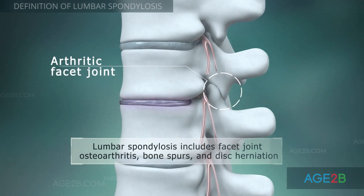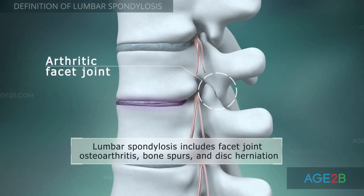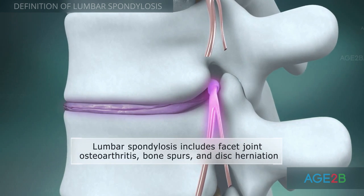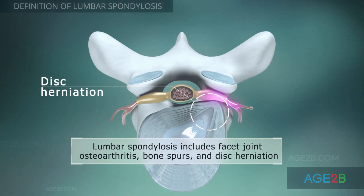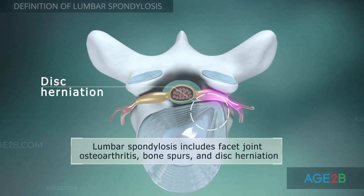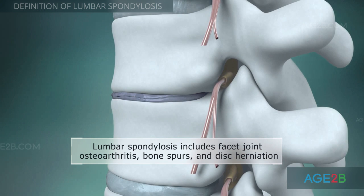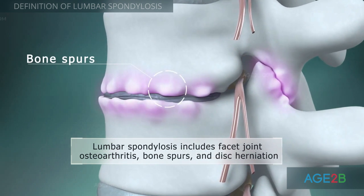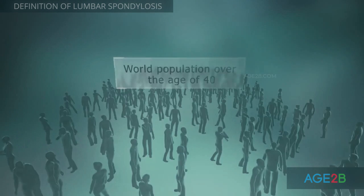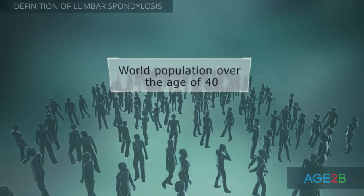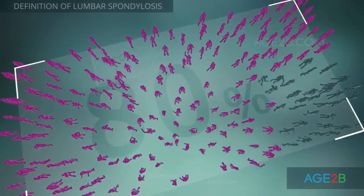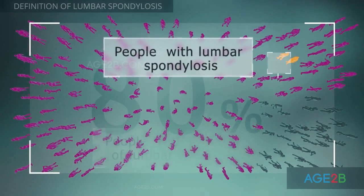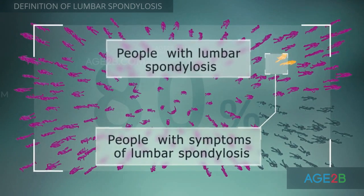Lumbar spondylosis is a degenerative condition of the lumbar region of the spine. This pathological condition can include facet joint osteoarthritis, bone spurs, and disc herniation. 80% of people worldwide over the age of 40 have lumbar spondylosis.